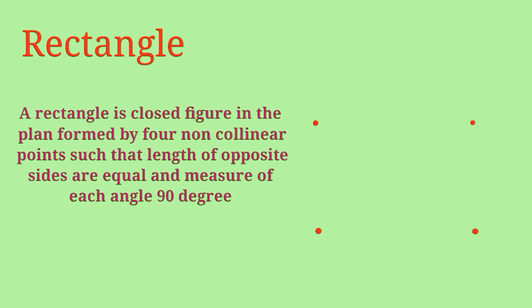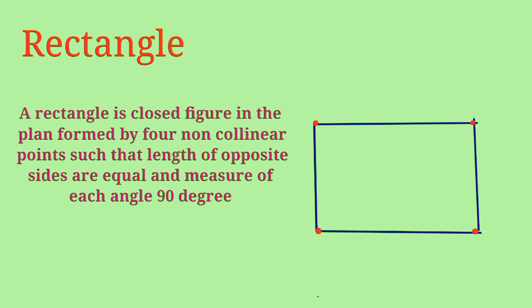A rectangle is a closed figure in the plane formed by four non-collinear points such that the length of opposite sides are equal and the measure of each angle is 90 degrees. So in this shape, the opposite sides have the same length and each angle is 90 degrees.